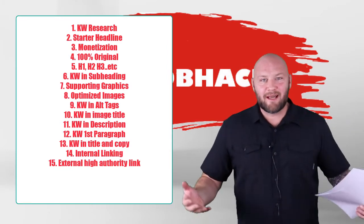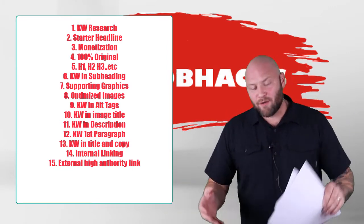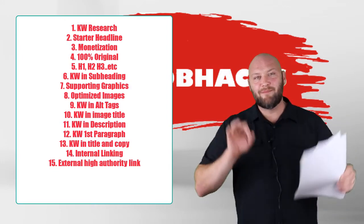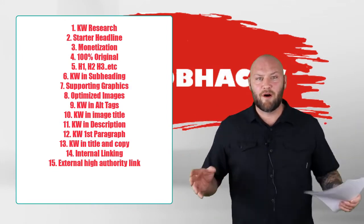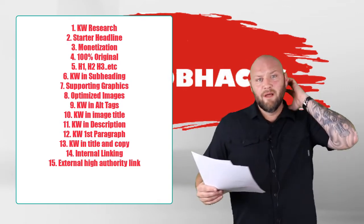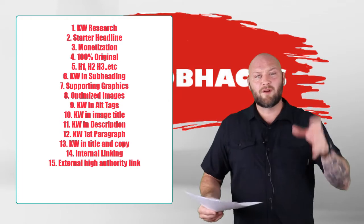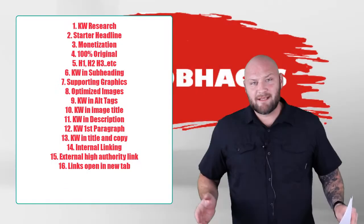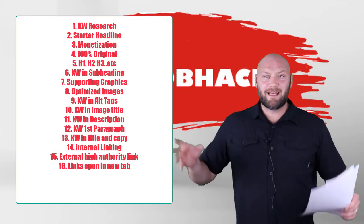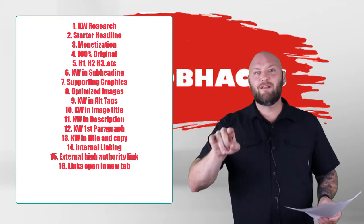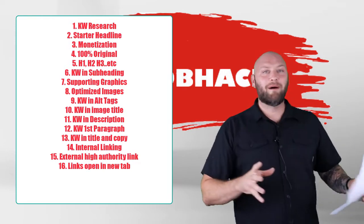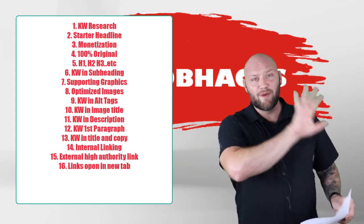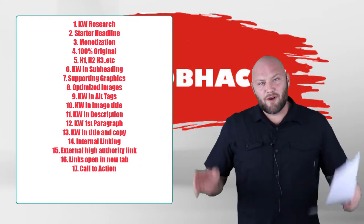Number fifteen: add a link to an external source that has authority. Whatever you're talking about in your article, link to an authoritative website — government sites, educational websites, etc. This gives you some authority and shows Google that your content links to sources it already knows about. Number sixteen: make sure all your links open in a new tab, so when readers click a link they don't permanently leave your blog post.